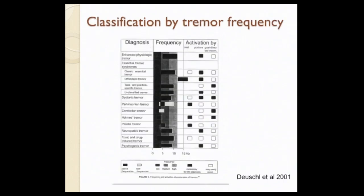This table classifies tremor by frequency. There have been many such attempts over the years, but I don't find it particularly useful because all tremor types overlap substantially in their frequency ranges. The one exception is orthostatic tremor, which has a particularly high frequency above 18 hertz — so high that you may not even see it visually. That is the only indication we use EMG for: to detect that particular tremor.